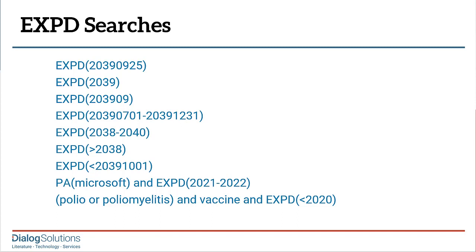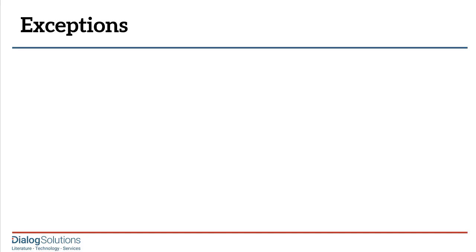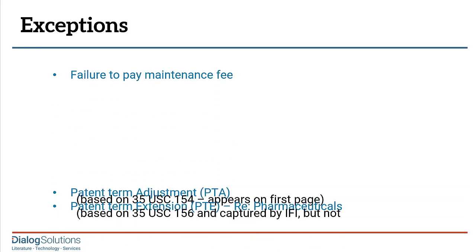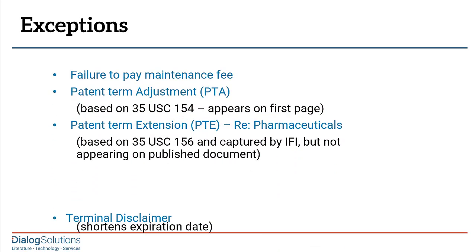Or you can limit a term search by calculated expiration date, as we see here. The use case for this would be what's called a freedom-to-operate search, where you're interested in using a certain type of technology and you want to know if it's currently under patent protection, or when the relevant patents are due to expire. The calculated expiration date search is very flexible and it's easy to do in IFI Claims, and most of the time it's a very straightforward calculation from the application date.